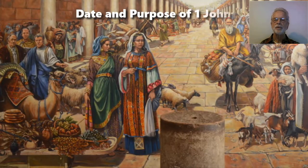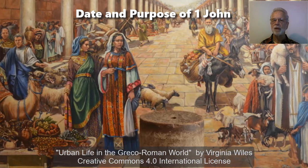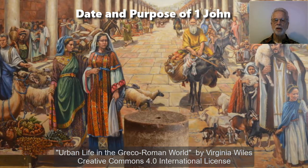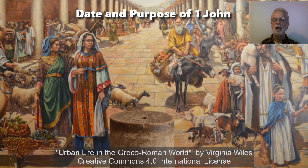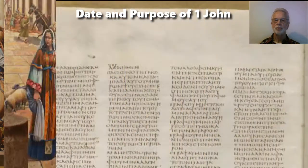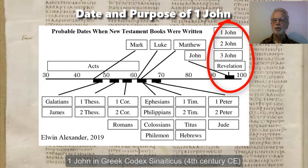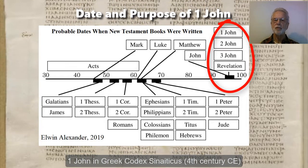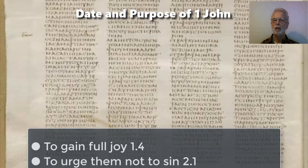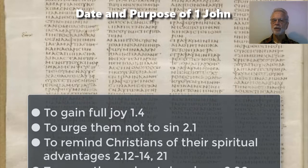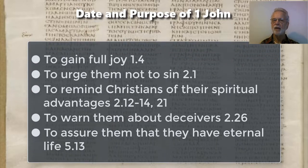Near the end of the first century, the Christians of Asia Minor were in their second and third generations, and the population had become tolerant of their new religion. Thus their main opposition came not from persecution, but from the appeal of Greek philosophy and the allure of Roman wealth. John probably wrote this epistle near the year 100 to steer young generations of Christians towards the original good news about Jesus, while affirming his love for them. He states the aims of his epistle as being: to gain full joy, to urge them not to sin, to remind Christians of their spiritual advantages, to warn them about deceivers, and to assure them that they have eternal life.